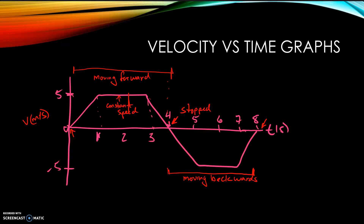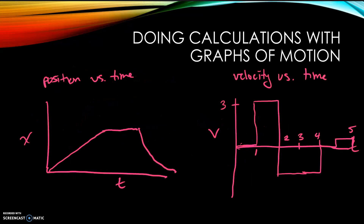We'll go over velocity versus time graphs in class — they can be a little tricky. In another week or so when we talk about acceleration, we'll look at these graphs again to see how we can get acceleration from them. For right now, I want you to know on both position versus time and velocity versus time graphs: where is the object moving forward, where is it moving backwards, and where is it stopped.